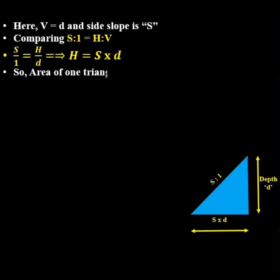Base is S into D and height is D. So, area of one triangle will be one half S into D into D is equal to one half S into D square.